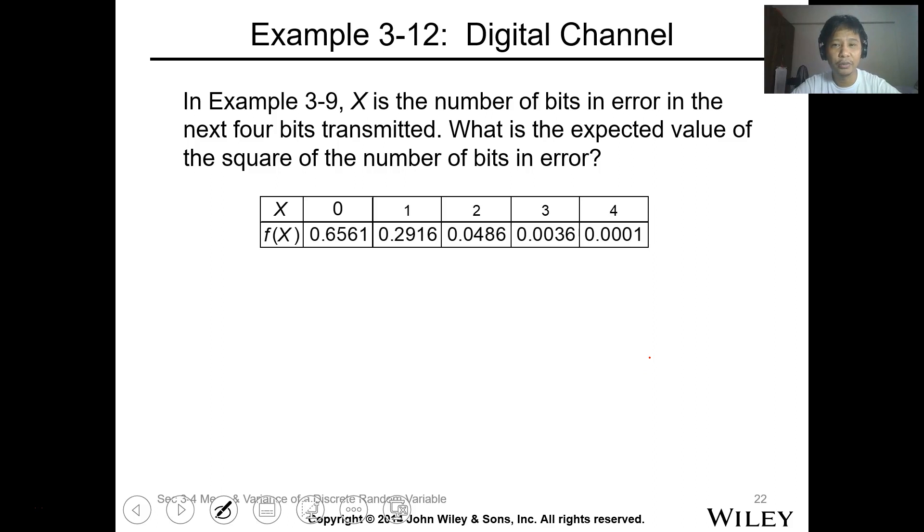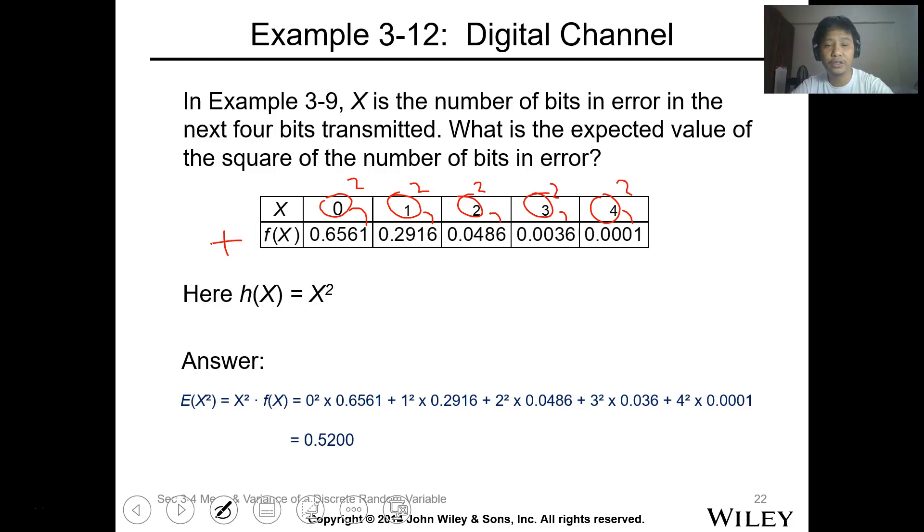Let's have this one. X is the number of bits in error in the next 4 bits transmitted, the previous problem. What is the expected value of the square of the number of bits in error? As we recall, your h(x) here will be x squared. So just square all the values of X and multiply it to its corresponding probability mass function, and get the sum of all of that. Your total is 0.52. You can use your calculator or excel for the calculation.